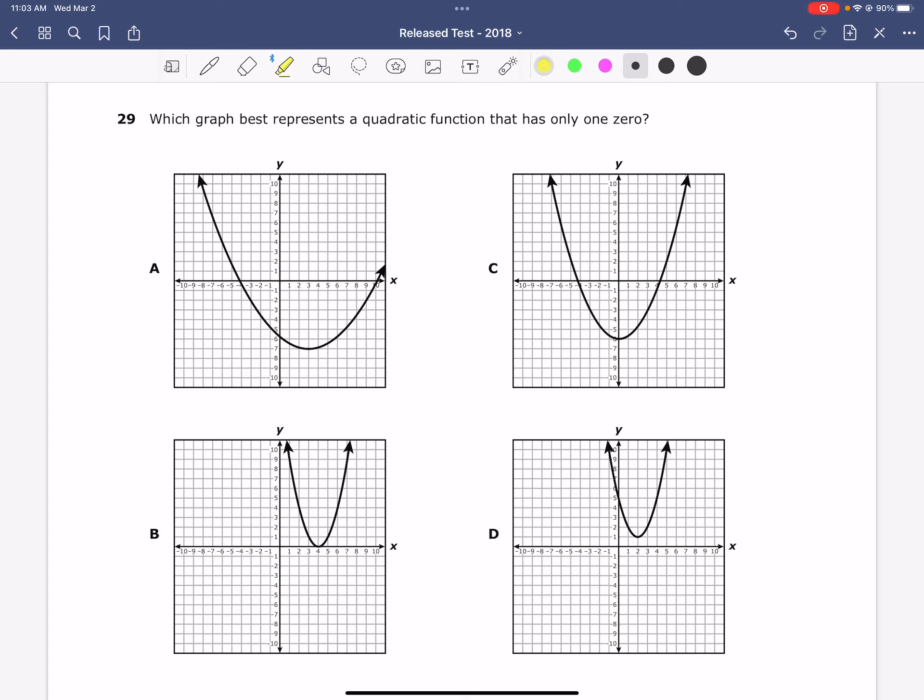Which graph best represents a quadratic function that has only one zero? We need to hone in on this word one zero. Remember that zero is just another way to say x-intercept, which is where a graph crosses the x-axis.